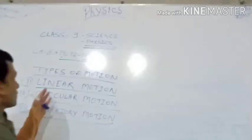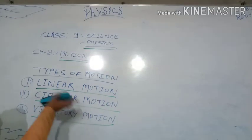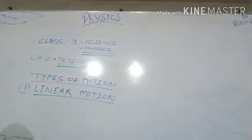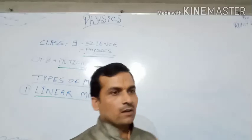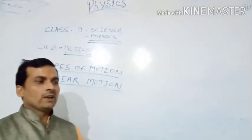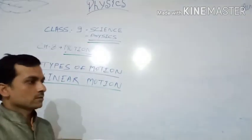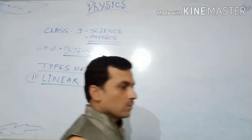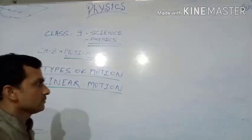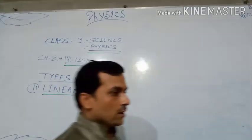First, we discuss linear motion. We see some examples in our environment: a car moving on a straight road, a man walking on a straight road, a train moving on a rail from one station to another station. These are examples of linear motion.